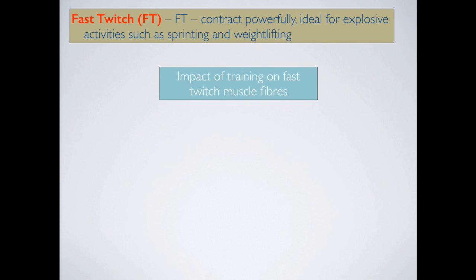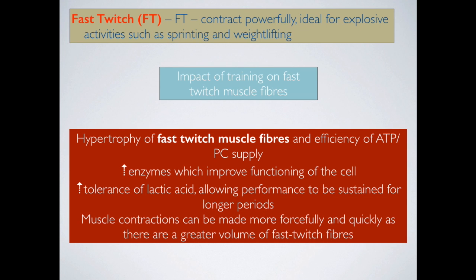In terms of the impact of training on fast twitch muscle fibres: hypertrophy of fast twitch muscle fibres occurs, particularly when we train specifically the anaerobic system — intense sprint training or intense resistance training. Also, the efficiency of ATP-PC supply improves in direct relationship to enzymes produced at the cellular level, which help to generate more phosphocreatine for the ATP-PC system. We also experience an increased tolerance of lactic acid, allowing for more sustained performance for longer periods.